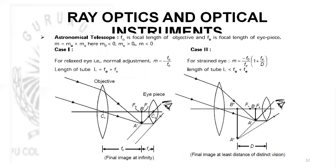For an astronomical telescope, the length of the tube L = f0 + fe, and magnification for normal adjustment m = -f0/fe. For a strained eye, m = -f0/fe * (1 + fe/D), and the length of the tube is less than f0 + fe. This concludes the topic of ray optics and optical instruments.